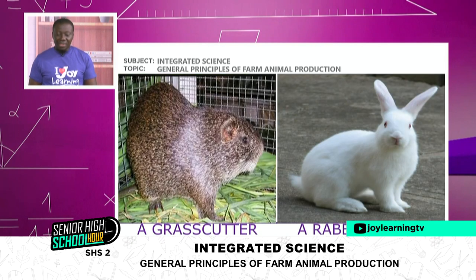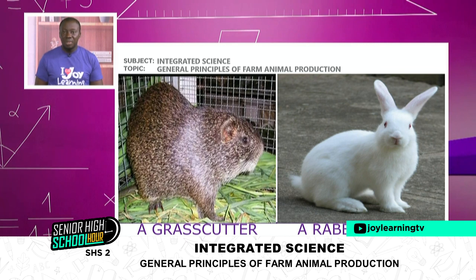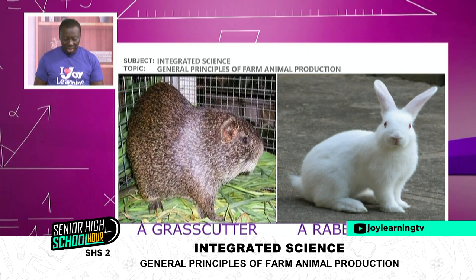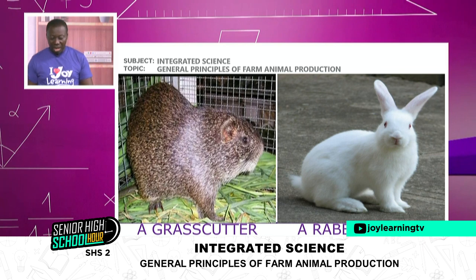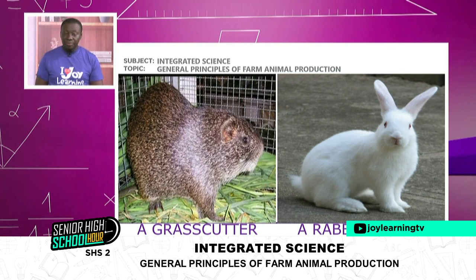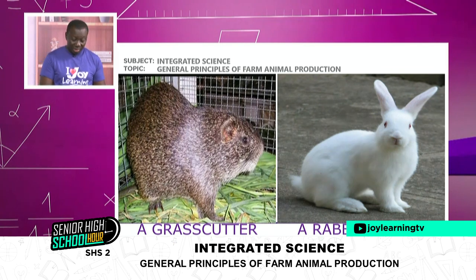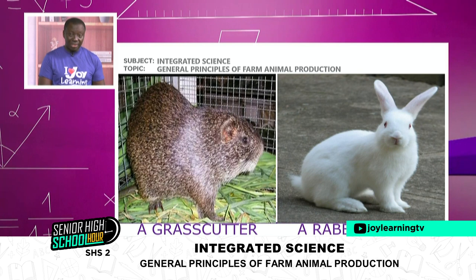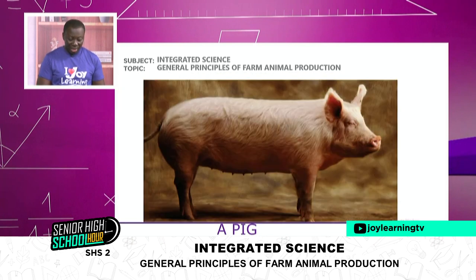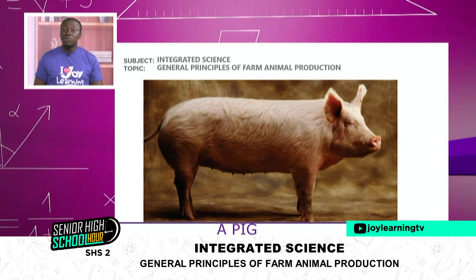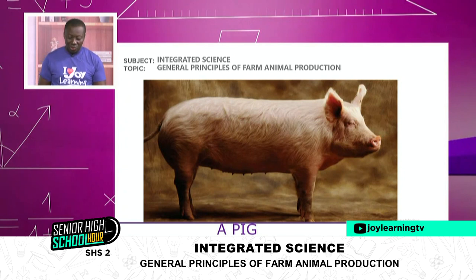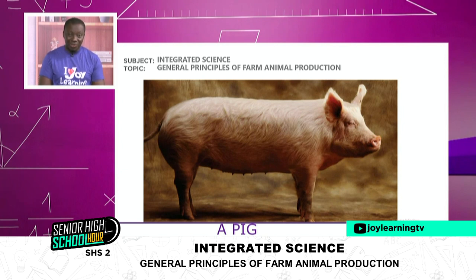We are looking at a grass cutter — a nice sight to behold when you see them feeding. We can use their meat and also the fur or the skin. On the right-hand side of your screen we have a rabbit — a very beautiful rabbit — and we can use their skin or fur for other things. Another non-ruminant we mentioned was a pig. We can get meat from it as well as the skin.